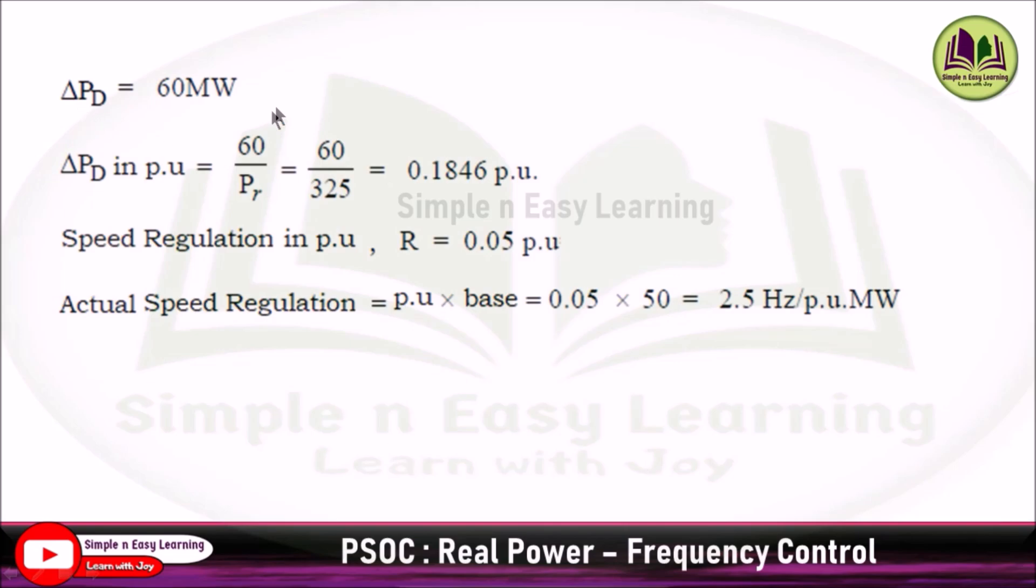The change in load is 60 megawatt. In per unit it is 60 divided by 325, that is 0.1846 per unit. Speed regulation in per unit R equals 0.05 per unit. Actual speed regulation is per unit value times base value, so 0.05 times 50, that gives you 2.5 hertz per per unit megawatt.